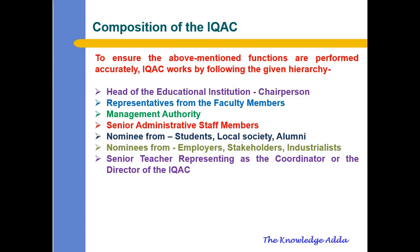Now, what is the composition of IQAC? To ensure the above-mentioned functions are performed accurately, IQAC works by following a given hierarchy: head of the educational institution as chairperson, representatives from faculty members, management authority, senior administrative staff members, nominees from the student body, local society, and alumni, nominees from employers, stakeholders, and industry leaders, and a senior teacher representing as the coordinator or director of IQAC. Some members can be added or reduced — this is just an example of the type of members that should be in the IQAC composition.